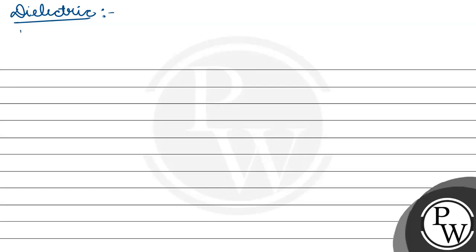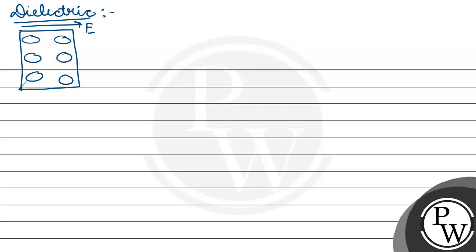So if this is dielectric, we have to keep it in an external electric field. So here, charges are produced — negative, positive, negative, positive, negative, positive. And here, induced electric field will produce. And this electric field will be in the opposite direction of external electric field.